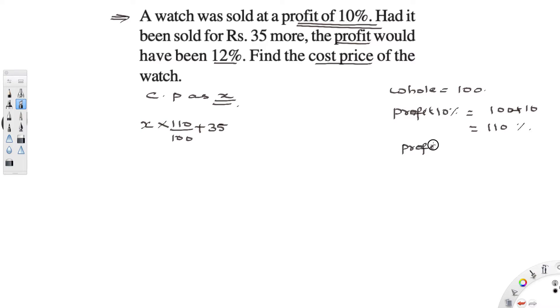Here again they are dealing with profit percentage. So the profit of 12% is nothing but 100 plus 12. So it is 112%. So when I add 35 to it, my profit is cost price into 112%.